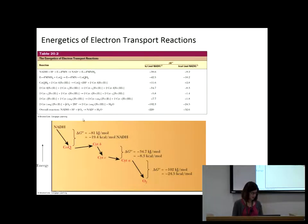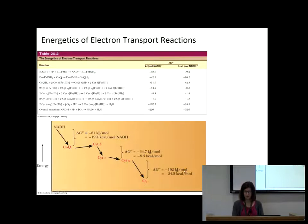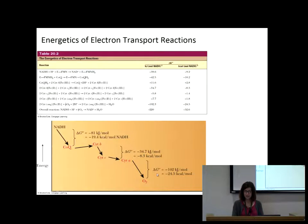Here's the free energy diagram. Complex 1, complex 3, and complex 4 are the three complexes where we get a lot of free energy. Complex 2 is not really addressed here because we're not taking it from FADH2 in this context. The free energy from these three complexes is significant, and that free energy is going to be used to pump those protons uphill.